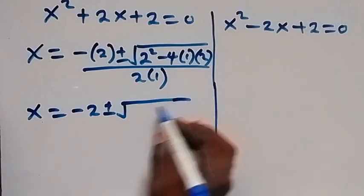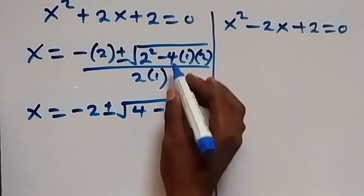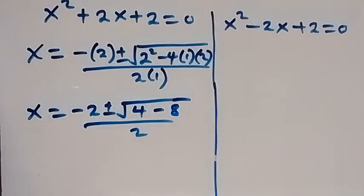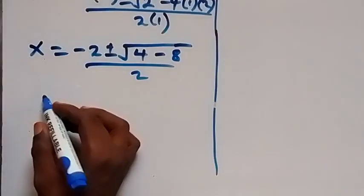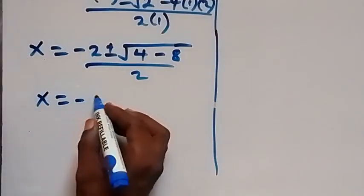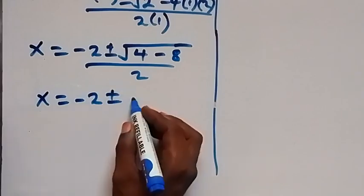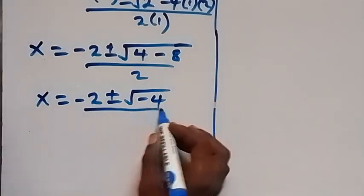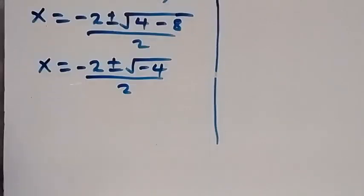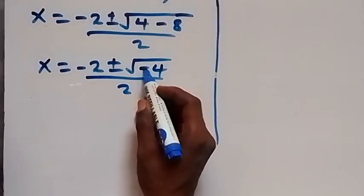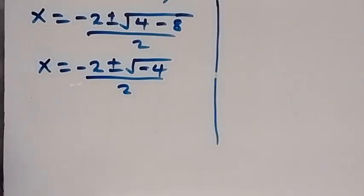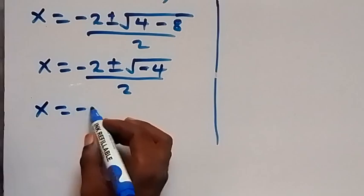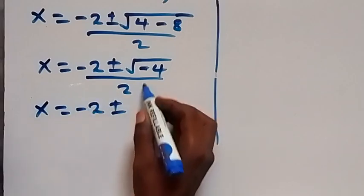This gives us 2² = 4, minus 4·1·2 = 8, so we have square root of (4 − 8) = square root of minus 4, over 2. We can separate square root of minus 4 into square root of 4 and square root of minus 1.